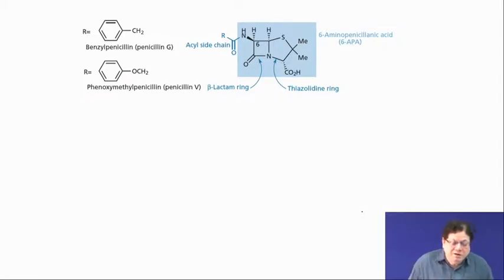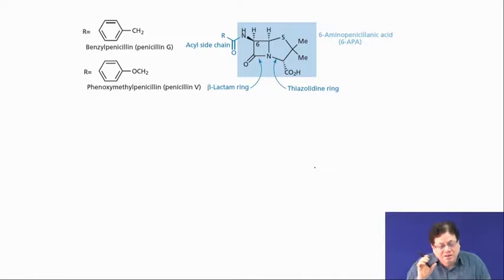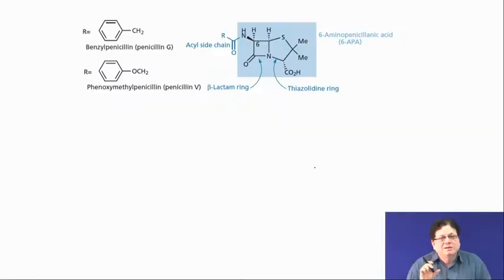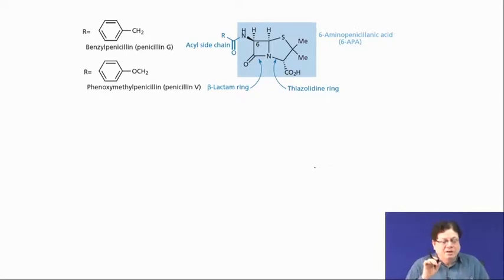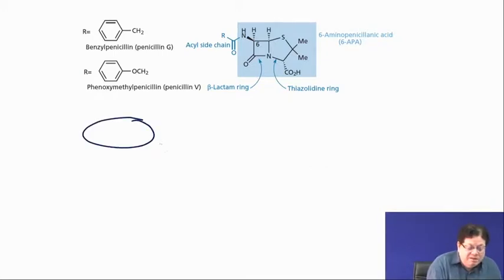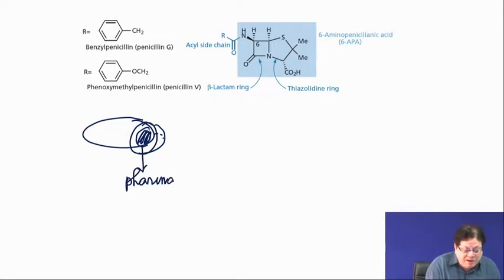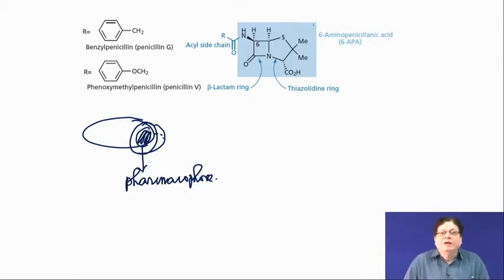Now let us come to the chemistry of penicillin. This is the structure of penicillin. The pharmacophore is the molecular entity present in the molecule that is essential — the part interacting with the enzyme or nucleic acid target. If I have a big molecule and only one part interacts with the enzyme, that part is the pharmacophore. The pharmacophore of penicillin is highlighted in light blue — that part is the pharmacophore.